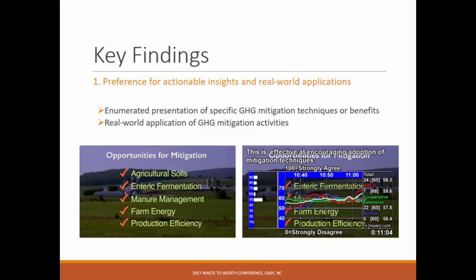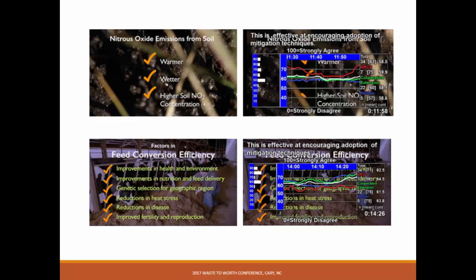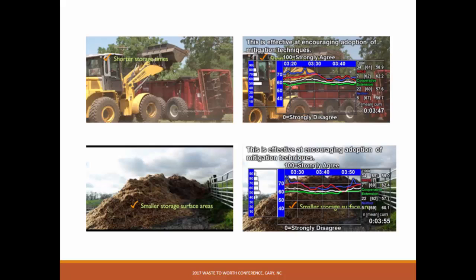On the right, it breaks down the 34 total participants: 7 were NRCS, 22 were extension. You can look at the graphs and it's interesting to see how they differ. Real-world application of greenhouse gas mitigation technologies — we had several points in the video with footage overlaid with bulleted lists, such as nitrous oxide emissions in the soil, feed conversion efficiency, and best management practices. You can see that the lines are going up and all participants showed positive responses.